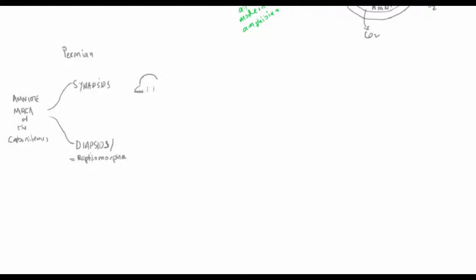Looking at a typical skull with the ocular orbit (the eye socket), behind it there's a structure called the post-orbital fenestra — 'post' meaning after, so behind the orbit, and 'fenestra' being the Latin word for window. This is a hole in the skull behind the eye socket, used largely for the attachment of jaw muscles. In the synapsids you have one post-orbital fenestra, while in the diapsids you have two.